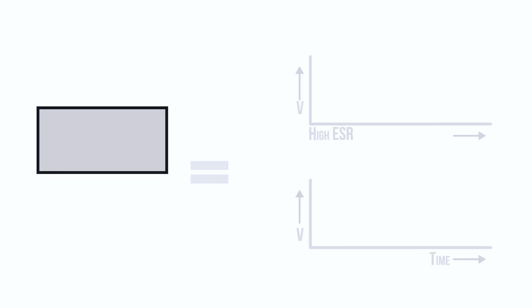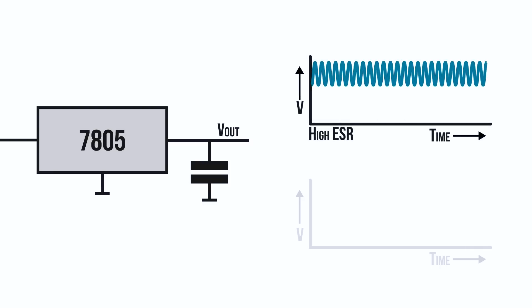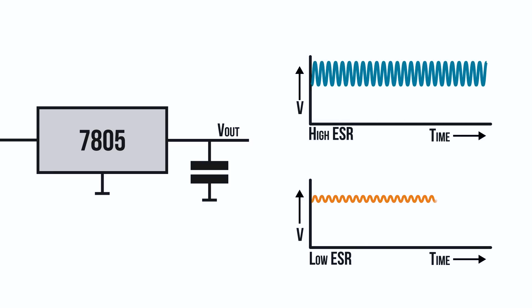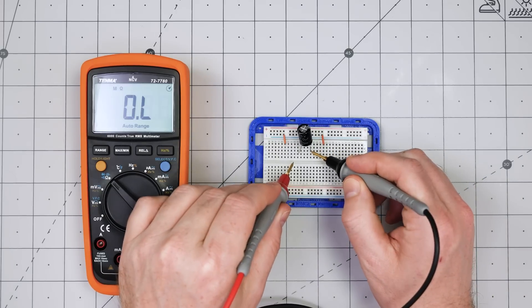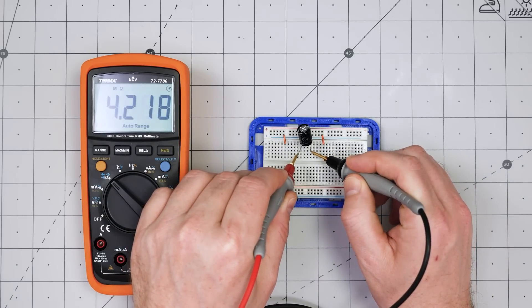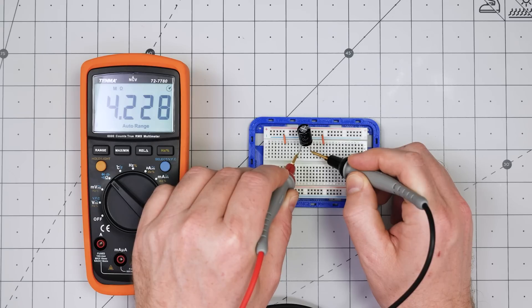ESR also affects a circuit's performance. For example, in a voltage regulator circuit, a decoupling capacitor with higher ESR will cause more ripple voltage than a similar capacitor with the same capacitance but lower ESR. If you try to use a multimeter to measure the ESR of a capacitor, you'll get a number like 4 megaohms. However, that is not the ESR — it is the insulation resistance, which is related to the leakage current.